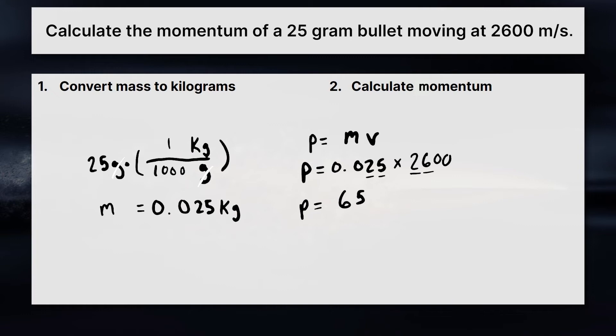The last thing to think about is the units. Remember that momentum has the units of just basically cramming together the mass and the velocity. So the mass has units of kilograms and the velocity has units of meters per second. And we cram those together, we get the units for momentum. So the momentum of this bullet, then, is 65 kilograms meters per second.